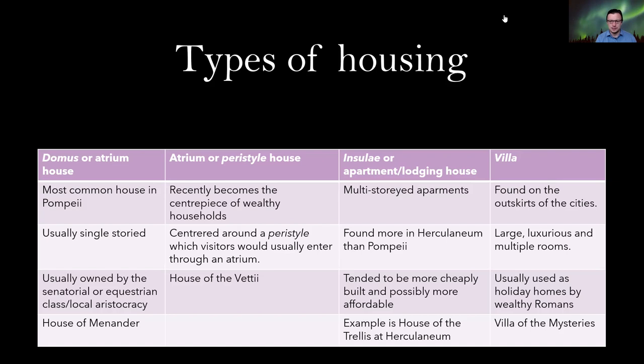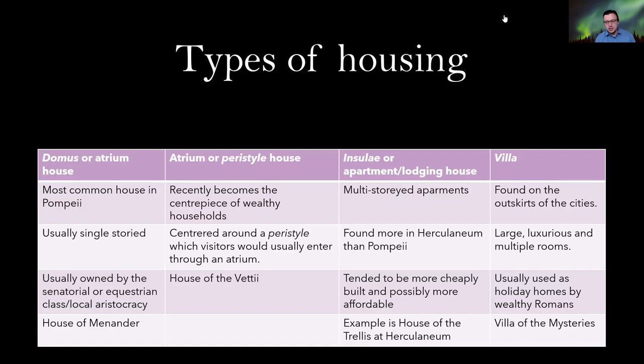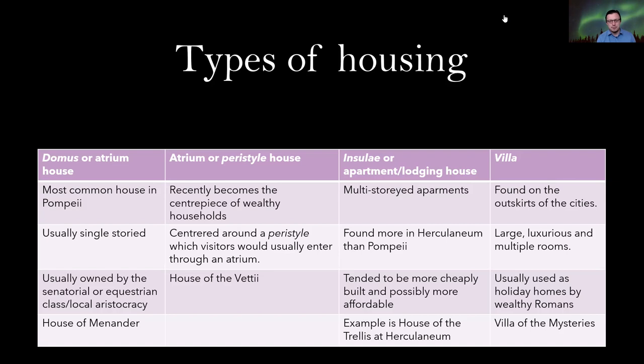The last type is the villa, found on the outskirts of the city — not in the city centre. Villas are relegated to near the city walls or just outside in the countryside. They are very large, luxurious, and have multiple rooms. They were definitely used as holiday homes by wealthy Romans. Visiting senatorial classes might reside here when not in Rome, or they could be owned by local elites — it's definitely a rich man's game. A really good example is the Villa of the Mysteries.